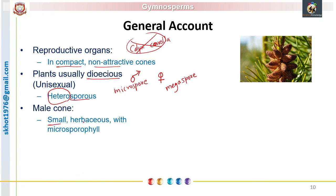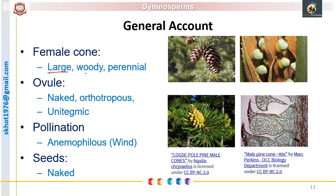The male cones are usually small and herbaceous in nature, produced in clusters with many microsporophylls. This picture shows the male cone of Pinus — small, about the size of a finger, herbaceous, and produced in clusters. The female cones are large, woody, and perennial. In the case of Pinus, the female cone takes three years for maturity.